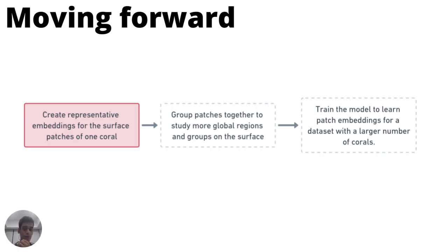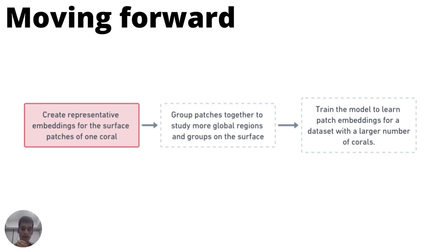An important part of moving forward is that once we fully understand how to characterize different regions of the coral surface, we can group different patches together to study more global regions and features. For example, the embeddings for patches covering an entire ring of the coral can be compared to other corals and the same coral. We also plan to train the model on a larger dataset — a limitation here was that during fieldwork at different sites in Singapore, we could only collect so many lidar scans.